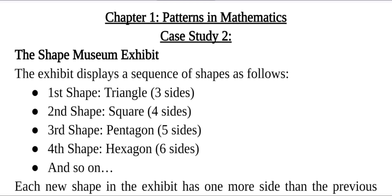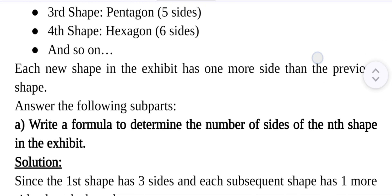The exhibit displays a sequence of shapes as follows: first shape, Triangle, a polygon with 3 sides; second shape, Square, a polygon with 4 sides; third shape, Pentagon, a polygon with 5 sides; fourth shape, Hexagon, a polygon with 6 sides, and so on. Each new shape in the exhibit has one more side than the previous shape.